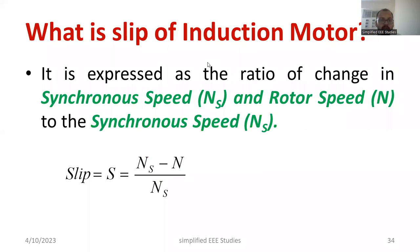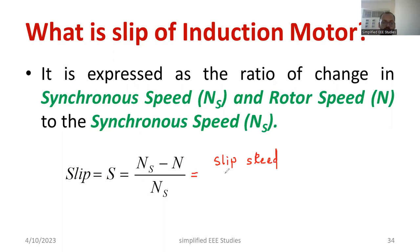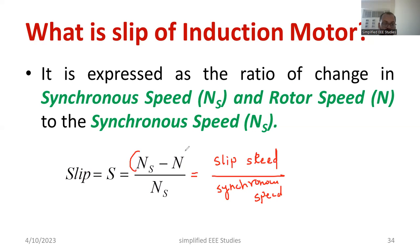If you know the slip speed, we can easily define what is the meaning of slip. Slip is expressed as the ratio of the change in speed — that is, NS minus N, which is the slip speed — to the synchronous speed NS. So: S = (NS − N) / NS. This ratio of slip speed to synchronous speed is known as slip.